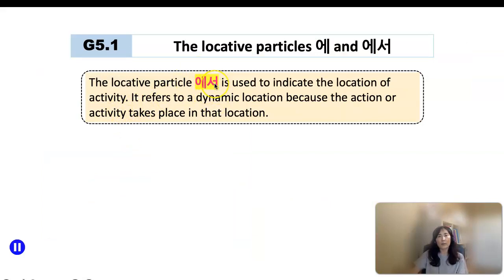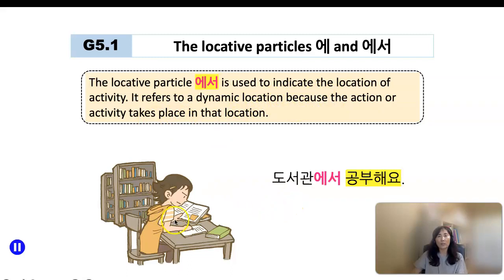Now I'm going to talk about this particle 에서. This is also referred to as a locative particle and it's used to indicate the location of activity. It refers to a dynamic location because the action or activity takes place in that location. So notice that you try to describe that someone is studying at the library. You can say, Sandy, Sandy가 도서관에서 공부해요. So you use this verb, an activity verb. When someone is engaged in some kind of activity and that activity is taking place in some location, you add 에서 to that place. 도서관에서 공부해요. This particle is similar to the English preposition at or in. 도서관에서 공부해요. She is studying at the library. So when there is a dynamic location, then you add 에서 instead of 에.